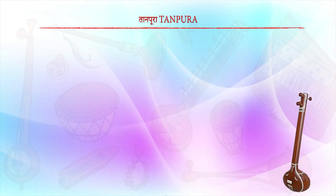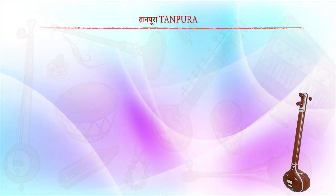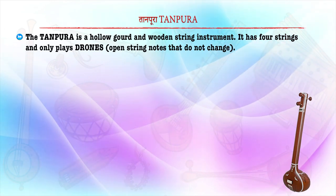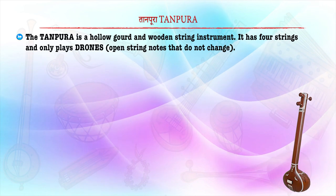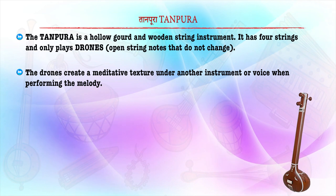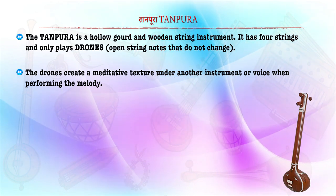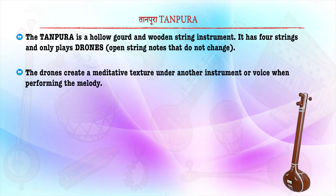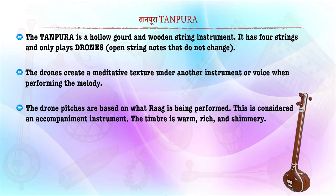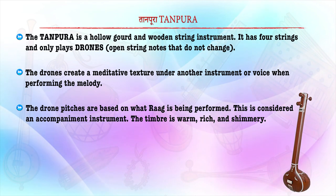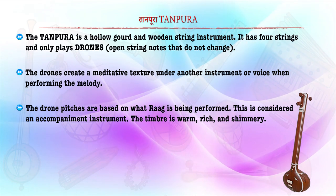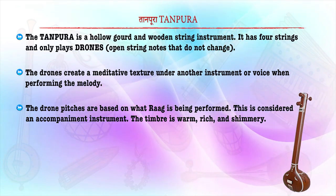The next important instrument is the Tanpura. The Tanpura is a hollow, gourd-shaped wooden string instrument with 4 strings that only plays drone. The drone creates a meditative texture, accompanying another instrument or voice performing the melody. The drone pitches are based on what raga is being performed. The timbre of the Tanpura is warm, rich and shimmery.